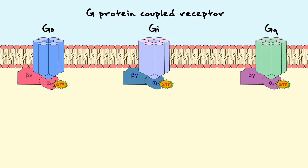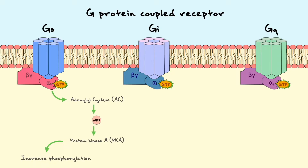Back to the schematic, here is a condensed view of what the GS pathway provides, which essentially summarizes what we have just discussed. As a side note, the S in the αS subunit is conveniently chosen because this subunit stimulates adenylyl cyclase.